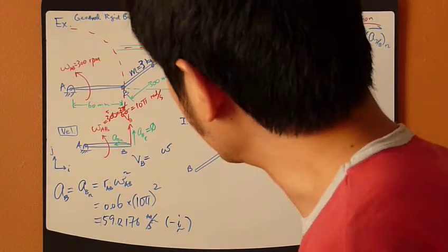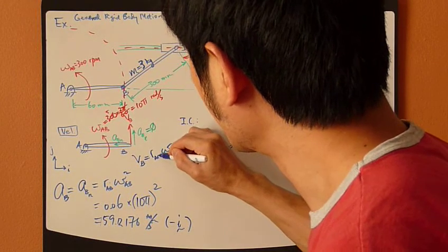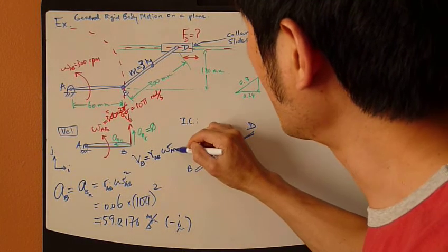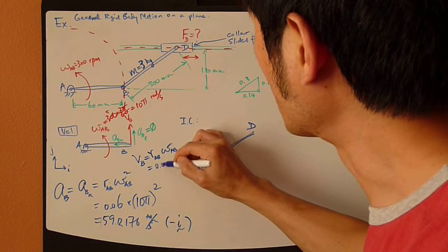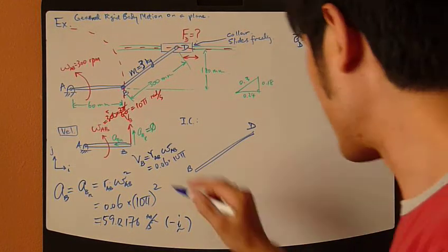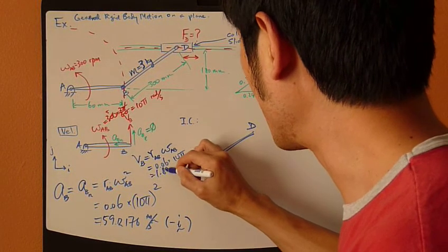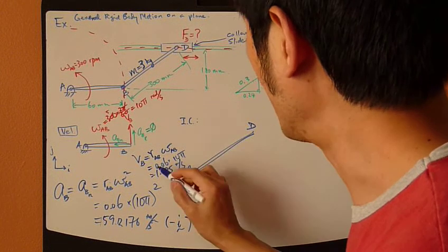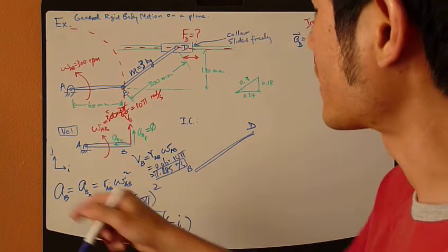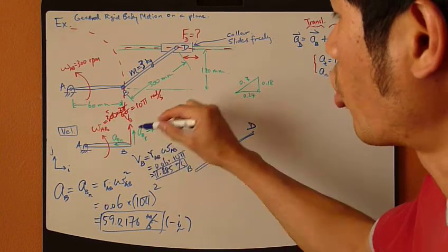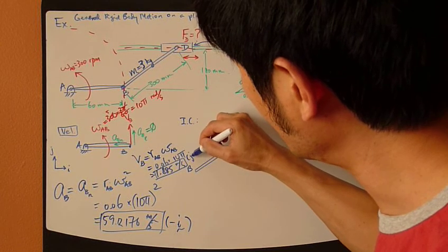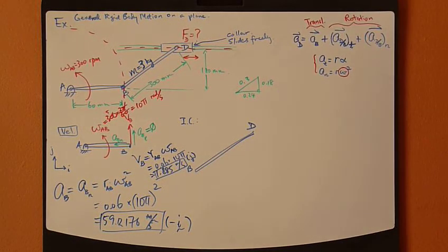And again, this R is the R going from A to B, which is the length of AB, times omega AB. So, that's 0.06 times 10 pi. That's 1.885 meter per second. So, now we've found velocity and acceleration of point B. And this velocity goes straight up, so that passes J direction.